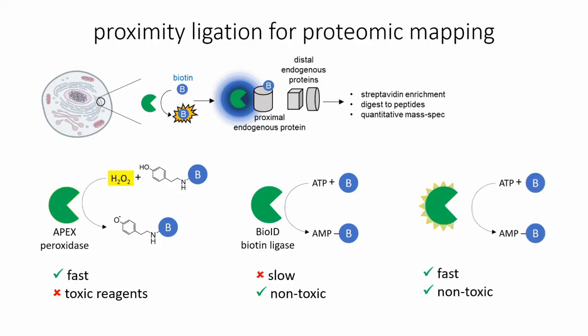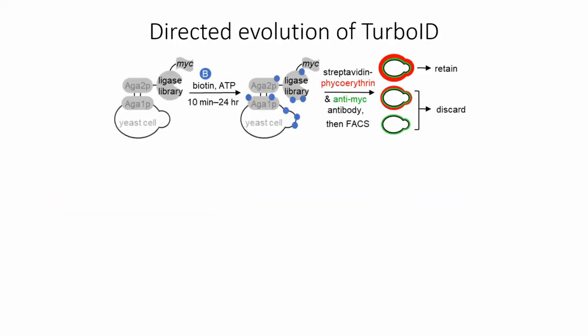When I was in the Ting lab, I worked to develop a new tool that's both non-toxic and fast, so we can explore dynamic biological processes in a much wider variety of settings and organisms. Because we wanted non-toxic labeling conditions, we knew we wanted to start with the biotin ligase-based method. But increasing the efficiency of these slow enzymes is very difficult using rational design, so we turned to nature's finest protein engineer — evolution.